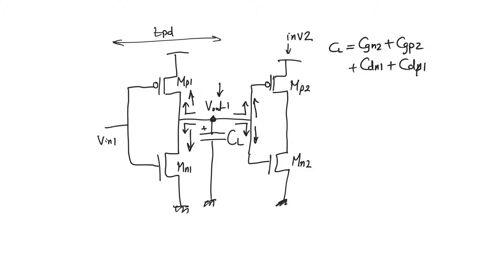If capacitor C_L is to charge, its only path to supply is through transistor MP1. Node V_output_1 sees the gate of MP2, so no current can come from that gate terminal. We can only provide current through the channel of MP1, so resistance R_P is R_P1. Similarly, the only path to discharge V_output_1 is through R_N1.